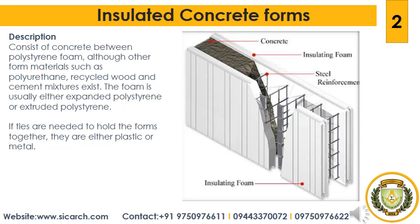Insulating concrete forms most commonly consist of concrete between polystyrene foam, although other form materials such as polyurethane, recycled wood, and cement mixtures exist. The form is usually either expanded polystyrene or extruded polystyrene. If ties are needed to hold the forms together, they are either plastic or metal. The forms in general fit together with interlocking tongue and groove joints and stack together accordingly.